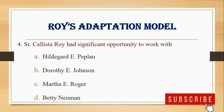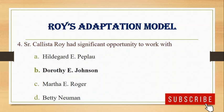Number 4. Sister Callister Roy had significant opportunity to work with: A. Hildegard E. Peplau, B. Dorothy E. Johnson, C. Martha E. Rogers, D. Betty Neuman. Answer: B. Dorothy E. Johnson. Sister Roy was a student of Dorothy E. Johnson.